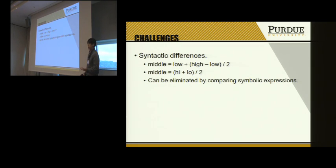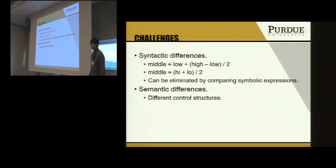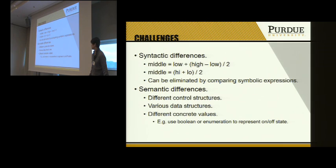This kind of difference can be eliminated by comparing their symbolic expressions. The other type is semantic differences: two programs may have different control structures, different data structures, and may also use different concrete values to represent the same thing.